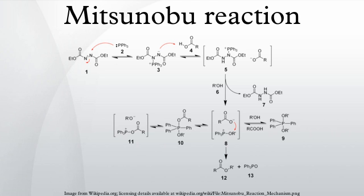Tsunoda et al. have shown that one can combine the triphenylphosphine and the diethyl azodicarboxylate into one reagent, a phosphorane ylide. Trimethylphosphorane and tributylphosphorane have proven particularly effective. The ylide acts as both the reducing agent and the base. The byproducts are acetonitrile and the trialkylphosphine oxide.